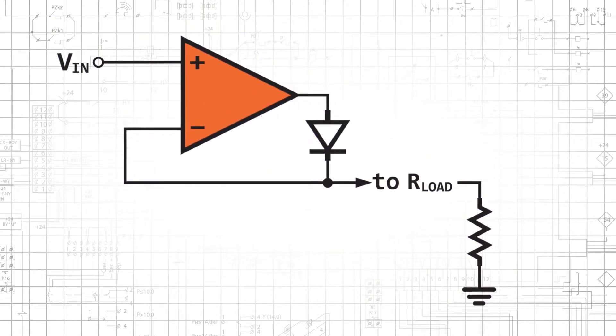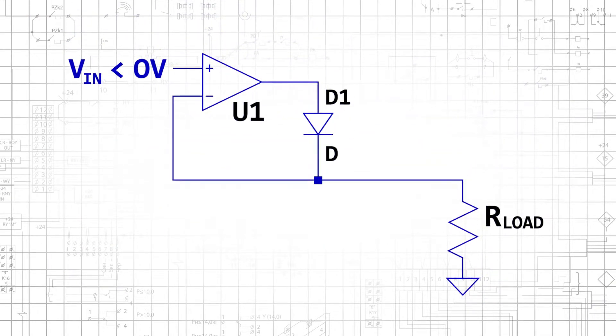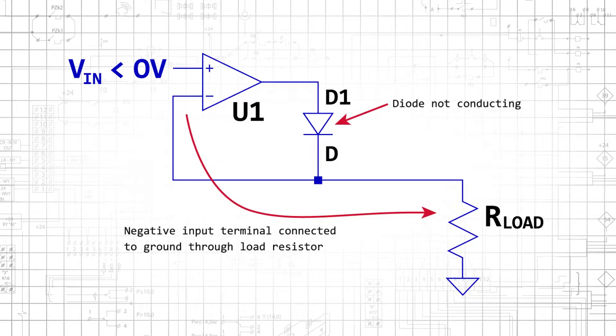An active rectifier can be implemented with an operational amplifier and a diode connected to a load resistance. By using negative feedback and amplification, this circuit bypasses the voltage range in which the diode does not conduct current. The active rectifier functions as a voltage follower even when the input voltage is much lower than the diode's threshold voltage.